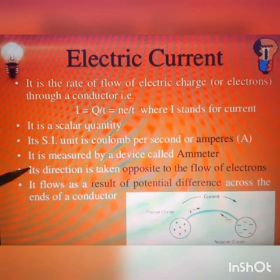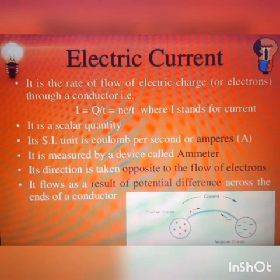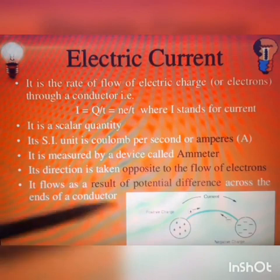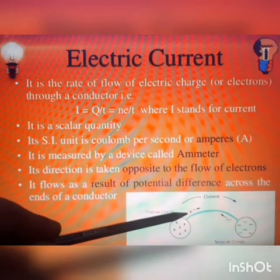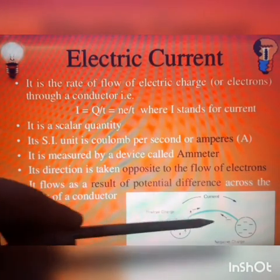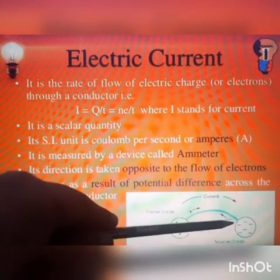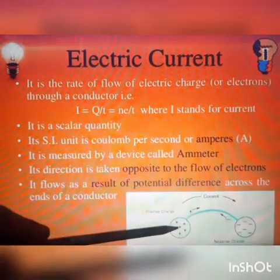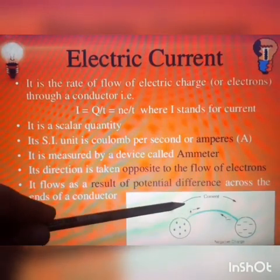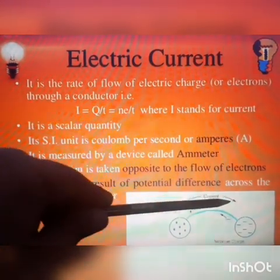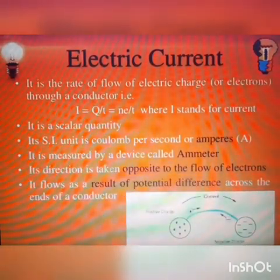The direction of current is always taken opposite to the direction of the flow of electrons. As you can see in the diagram, if the electrons are moving from right to left, the direction of current is taken to be from left to right.